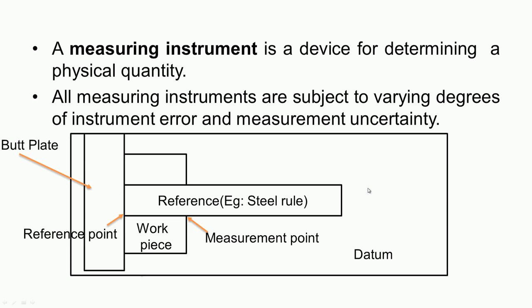If the measurement process is very simple — like measuring the length or diameter of a work piece using a micrometer — we can just hold the micrometer in one hand and the work piece in the other and measure. In this case, a datum is not required.